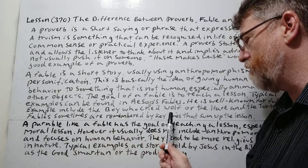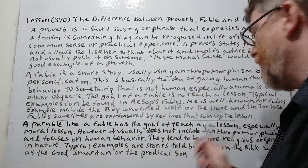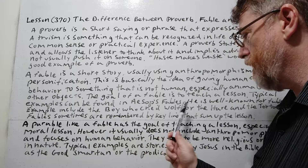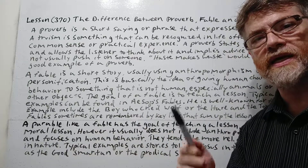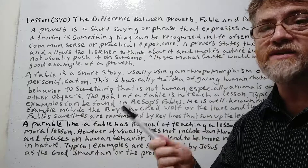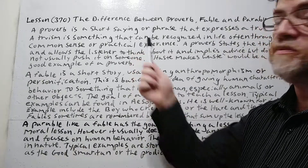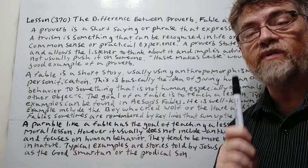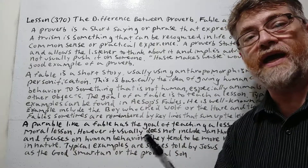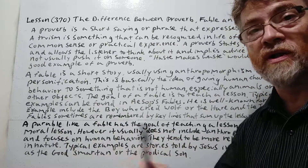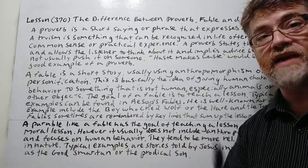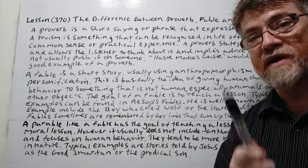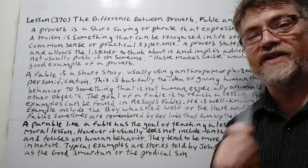Fables are sometimes remembered by key lines that sum up the lesson. For example, "The Boy Who Cried Wolf" gives us the phrase "to cry wolf," which can almost be used like a proverb. Similarly, "The Hare and the Tortoise" gives us "slow and steady wins the race" — because the turtle never gave up, even moving slowly, and won mostly because the rabbit fooled around, which is another lesson of that story.